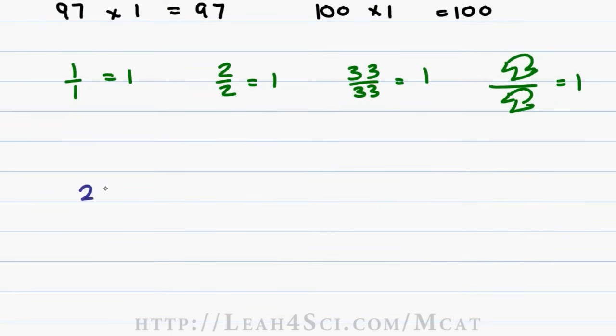So for example, if I take something like 23 times 1 over 1, the answer is 23. 23 times 4.67 divided by 4.67 is still just 23 because I am simply multiplying 23 by 1.